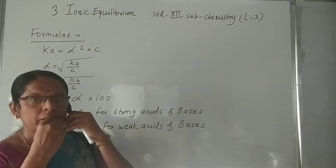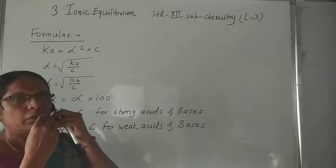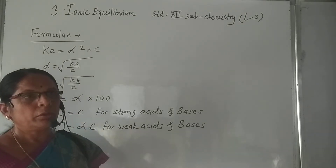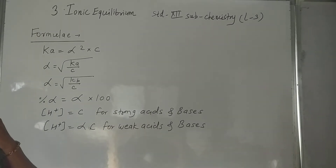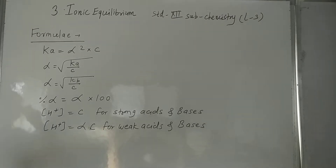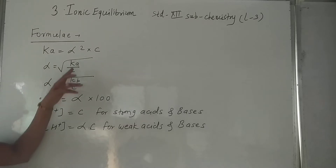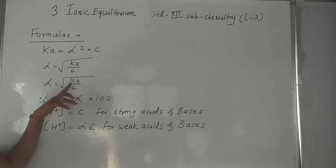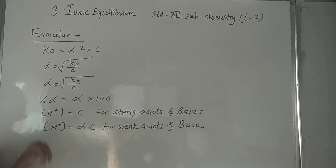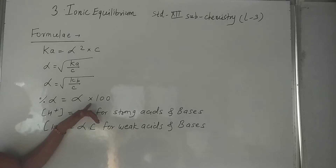Hello students. In the last lecture we discussed Ostwald's dilution law. Today we are solving numericals on Ostwald's dilution law. The formulas we use are: K = α²C, which gives α = √(K/C), or α = √(Kb/C). Similarly, percentage dissociation = α × 100.